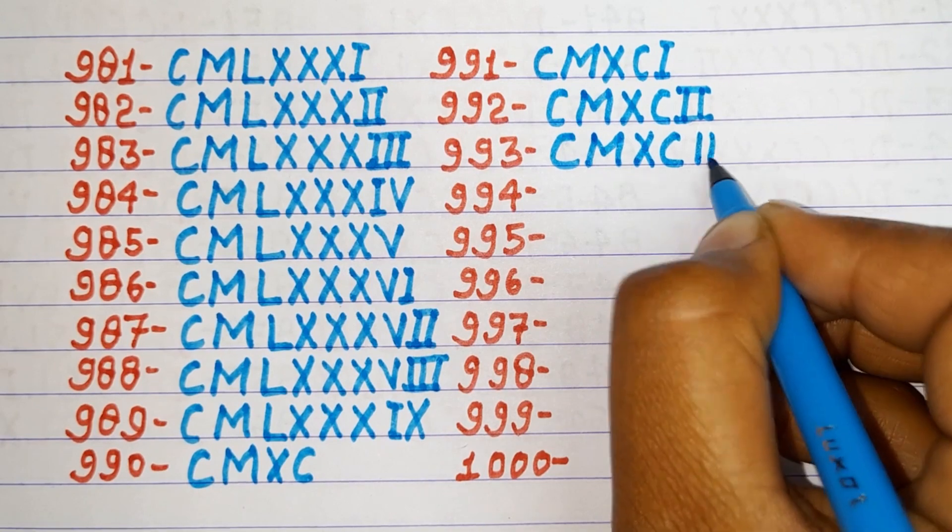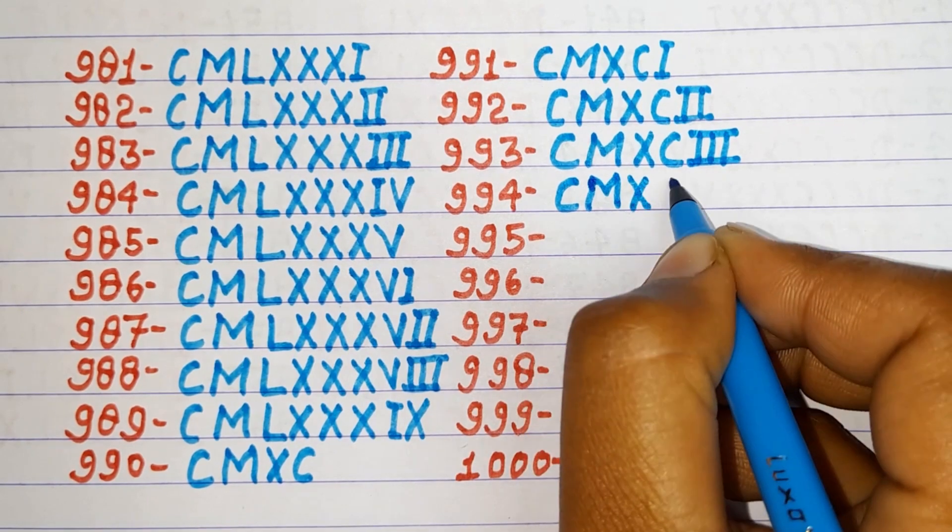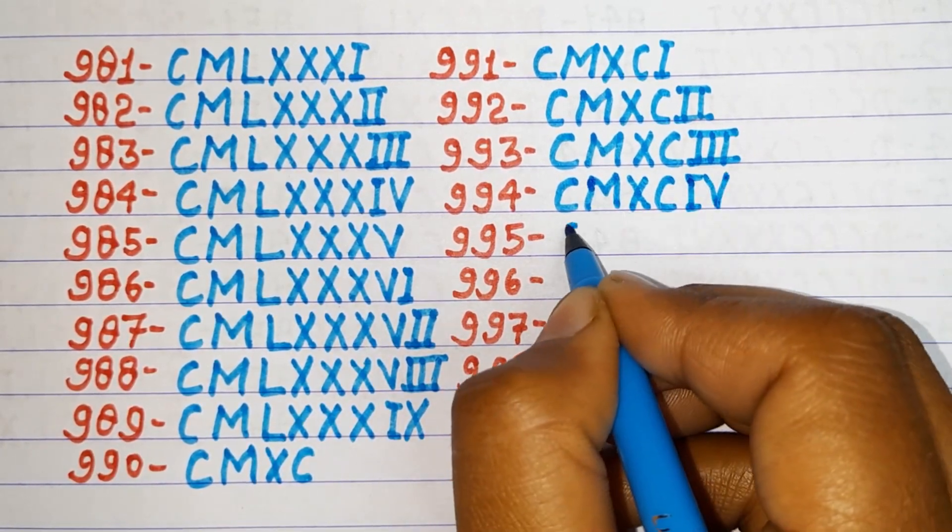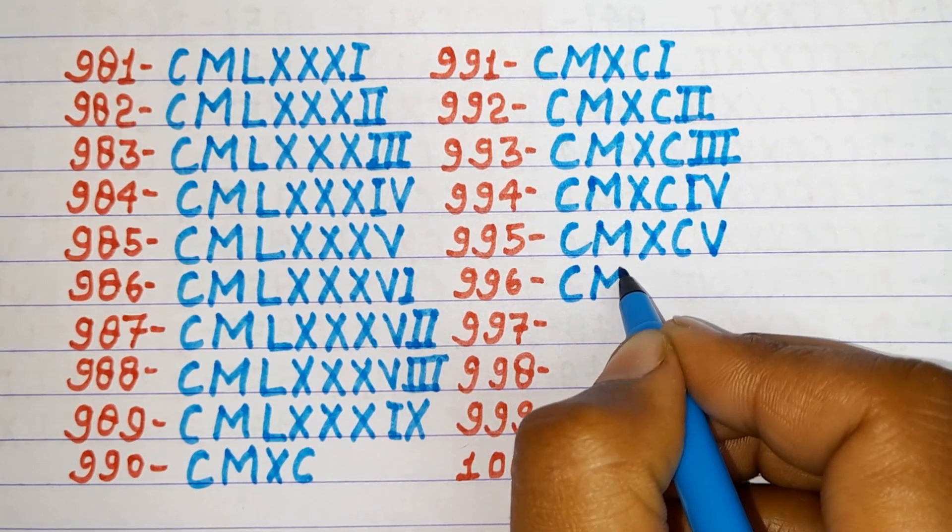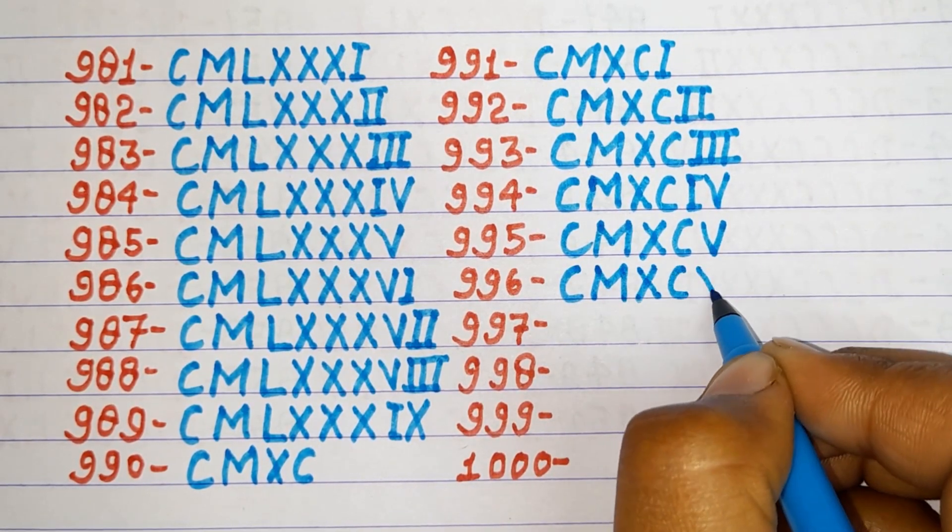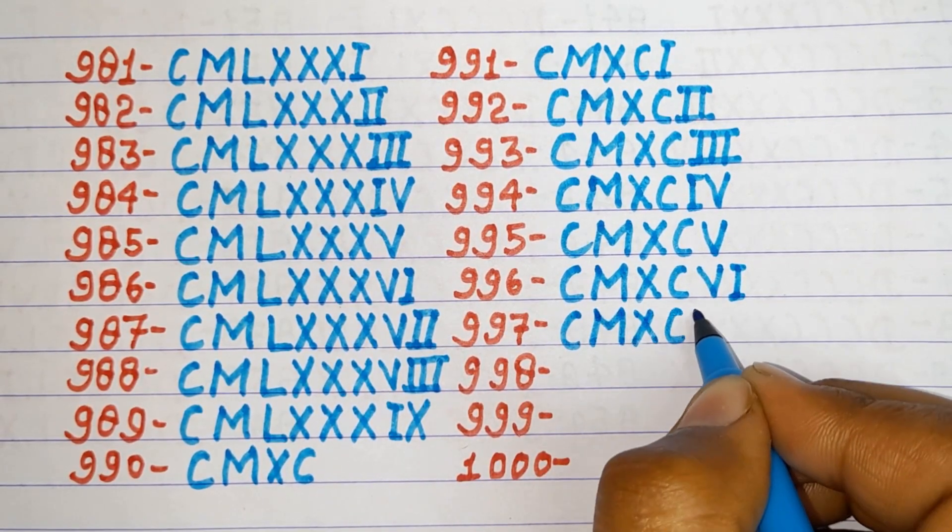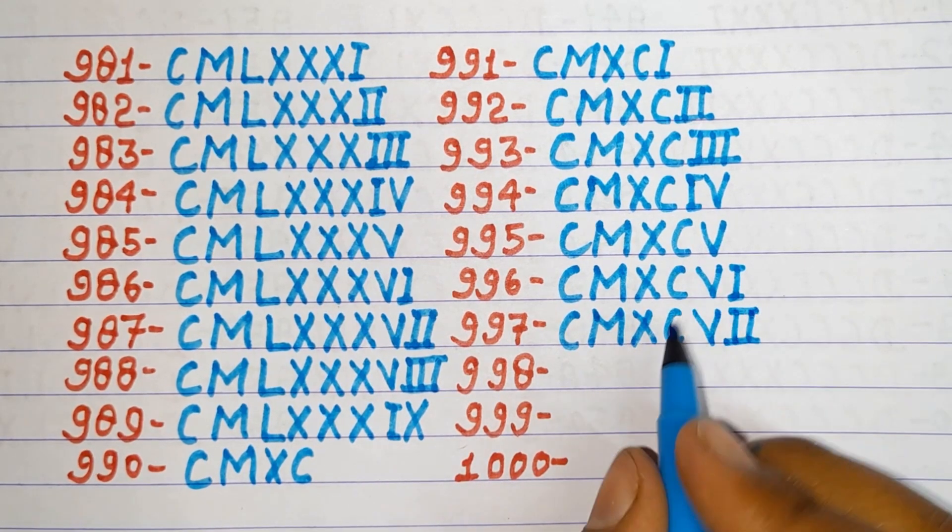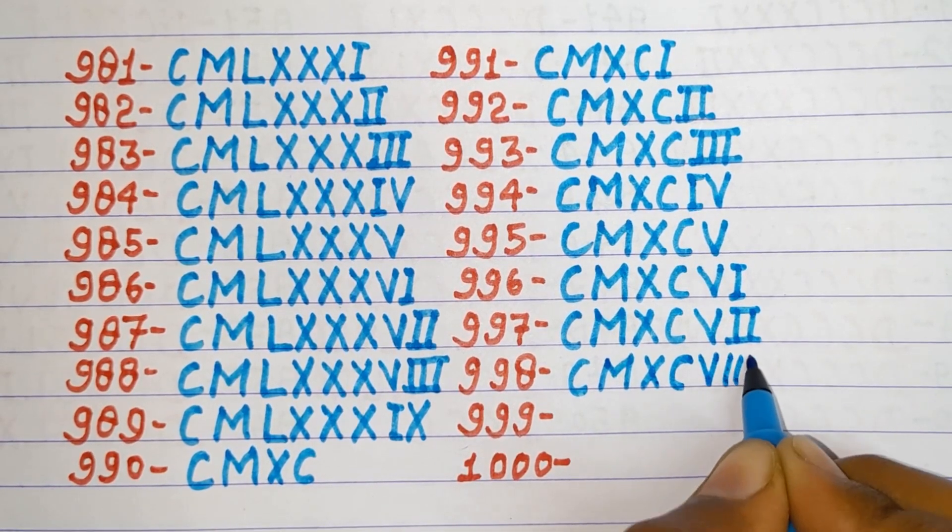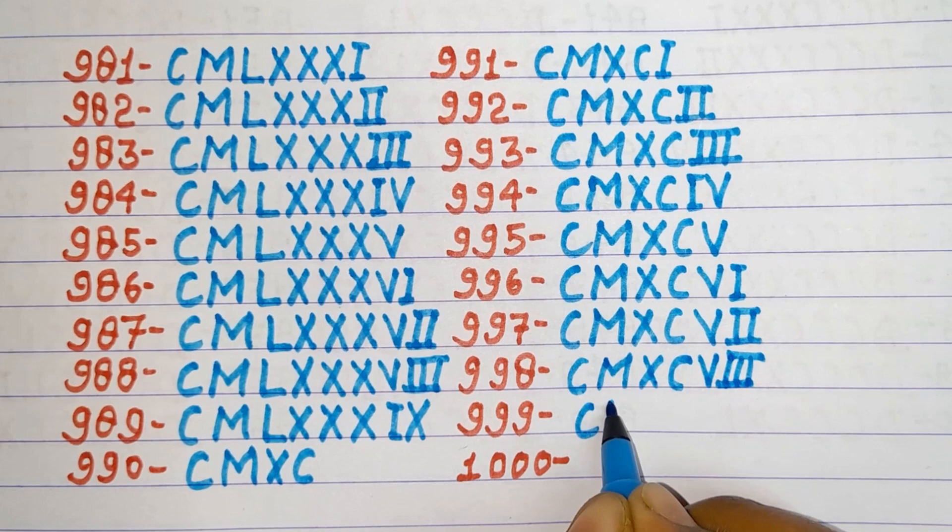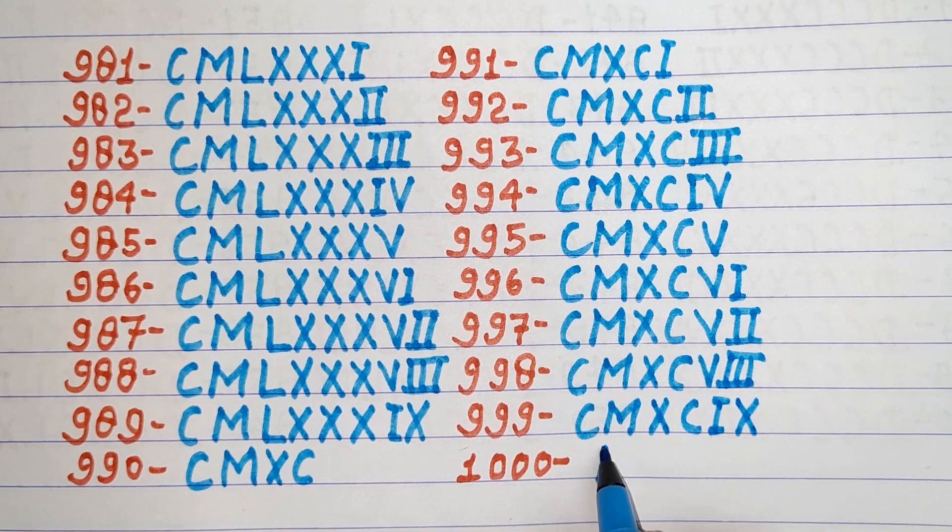991 CMXCI, 992 CMXCII, 993 CMXCIII, 994 CMXCIV, 995 CMXCV, 996 CMXCVI, 997 CMXCVII, 998 CMXCVIII, 999 CMXCIX, 1000 M.